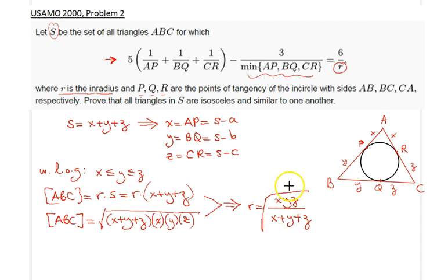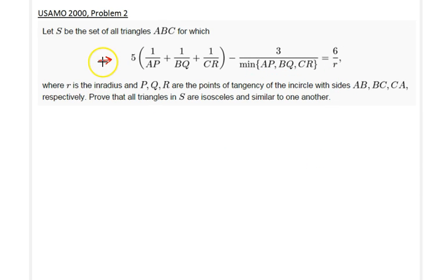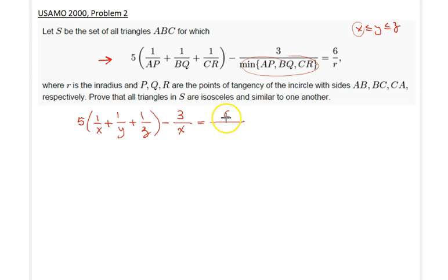In the next step I will just substitute this expression into the equation here. So we have five times one over x plus one over y plus one over z, minus three over the minimum of these, which given our assumption would be just x here, so three over x, and that's equal to six over, well we will replace the r with what we found on the previous page, the square root of xyz all divided by x plus y plus z.